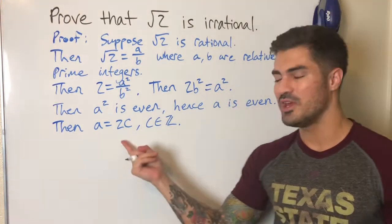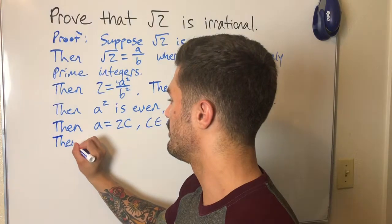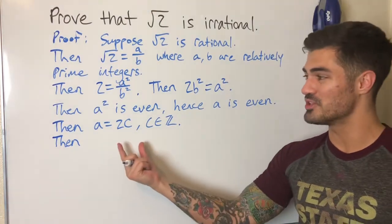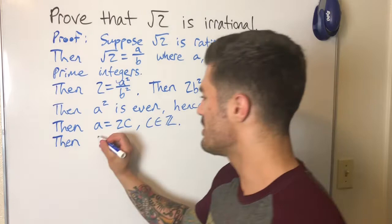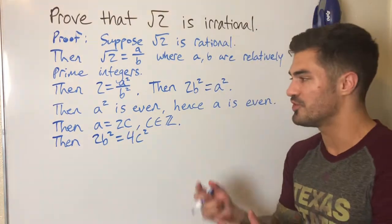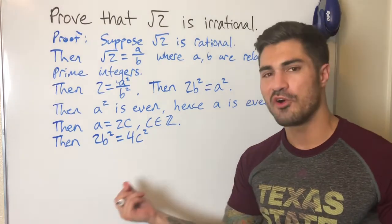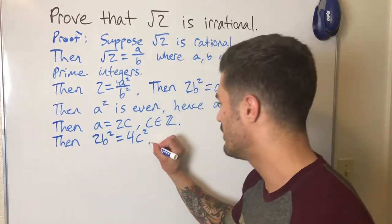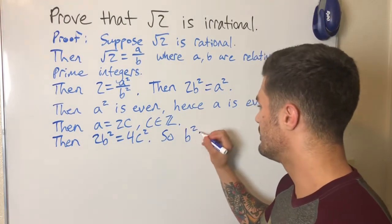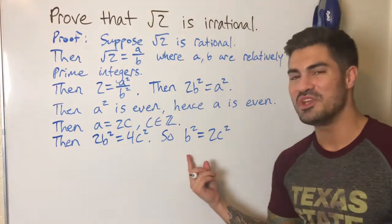Now let's go back to the equation 2b² = a² and replace a with 2c. So 2b² = (2c)² = 4c². Then multiplying both sides by one half, I get b² = 2c². I think I can see what my contradiction is going to be from here.